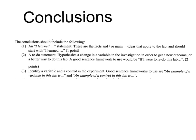We finish with conclusions. Conclusions should include a statement of what you learned, a statement of what you would do differently if you did the experiment again, and an identification of variables and controls in the experiment. Don't worry if your experiment didn't work as well as you'd like — if it didn't work very well, your 'redo' statement should be quite easy to write, because you can include ideas for how to do the experiment in ways that would give better results. That's perfectly fine.